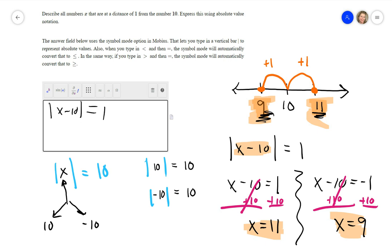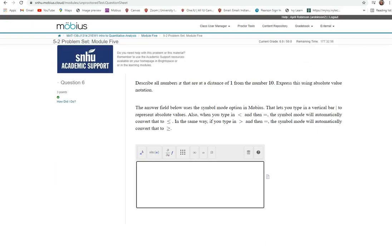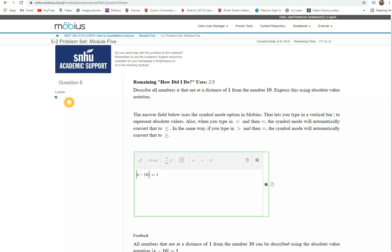If it had said a distance of 1 or less, then I'd be doing it in equality. Let me jump back to here and type it in. Let's see. You can click on this AB right here, and it gives you an absolute value. And then you're just going to have to go back in and backspace the a and then type x minus 10. Jump over the absolute value sign equals 1. How did I do? And it liked it.